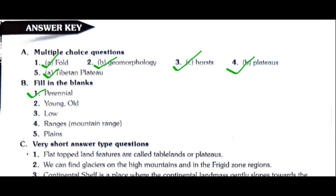Fill in the blanks. Question 1: Rivers flowing throughout the year originating from the glaciers are called perennial rivers. Question 2: Young and old mountains are types of fold mountains. Question 3: The word 'low plain' refers to a very deep oceanic plain. Question 4: Mountains built in a series of parallel chains are known as ranges. Question 5: An unbroken flat land surface is called a plain.